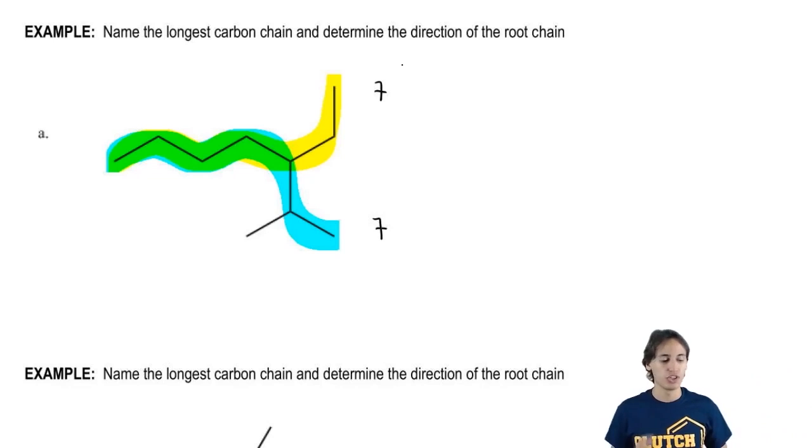So what do you guys think? The green area means that that's going to be the chain no matter what. But should I go to the yellow, should I go up or should I go down to the blue? There is actually a rule to determine this. If there's a tie between two different ways that you can make a longest chain, how do you determine which one is the winner? The way you determine is by the one that gives you the most substituents.